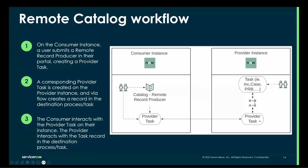RPS is used to replicate that information — the provider task — over to the provider instance. On the provider instance, the flow that is configured for that remote catalog item takes all of those variables and data to the process that will be fulfilled. On the provider side, fulfillers are not really looking at the provider task; it's more of a pass-through record. The flow takes that information and sends it to an incident, a case, a problem, a change, or even another service catalog item.